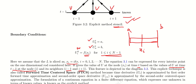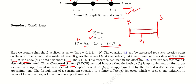This explicit technique is also called the Forward Time Centered Space method — FTCS — because the time derivative is represented as a forward time first-order approximation, while the second-order space derivative is represented as a second-order centered space approximation. The formulation of a continuum equation into a finite difference equation expressing one unknown in terms of known values is known as the explicit method.